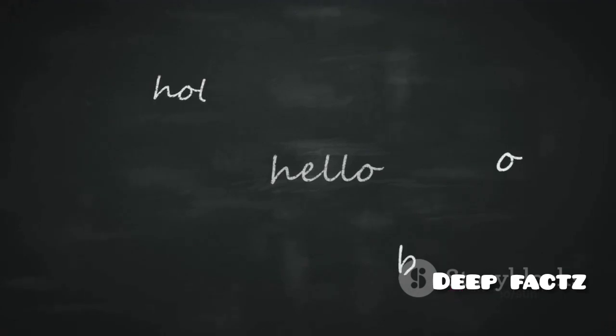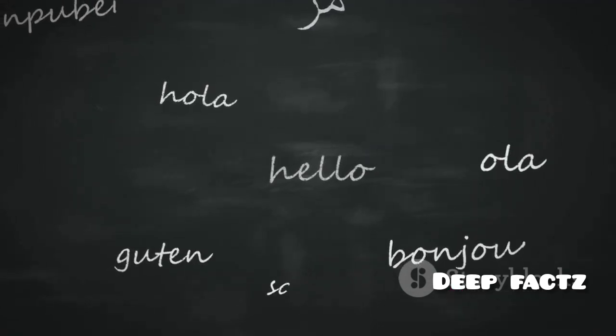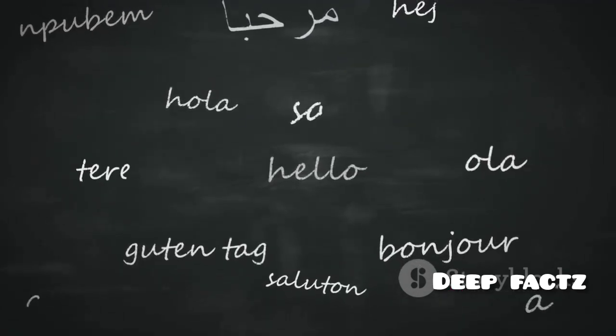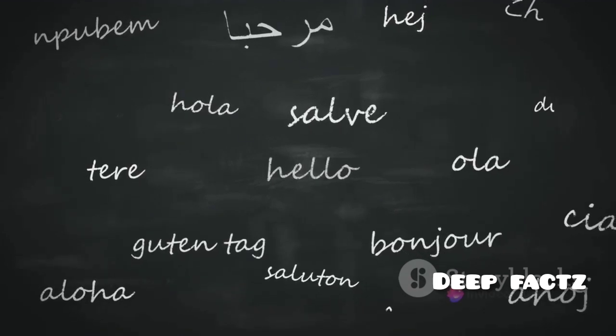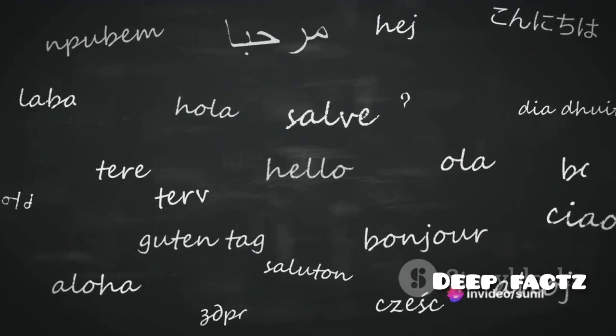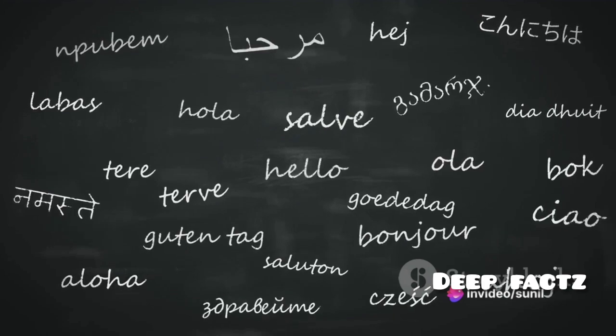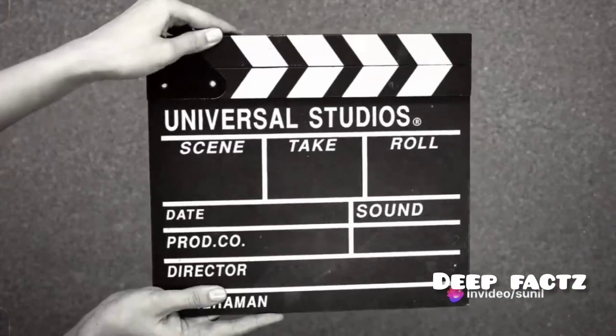Linguistics, too, grapples with the universal in the form of Noam Chomsky's universal grammar proposal. It suggests inherent structures common to all human languages, implying a universal cognitive basis for language acquisition.